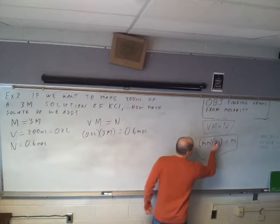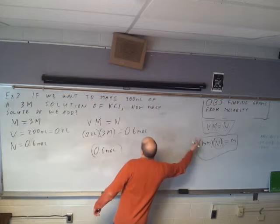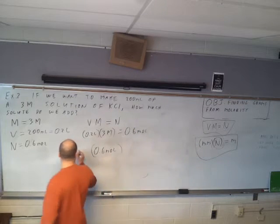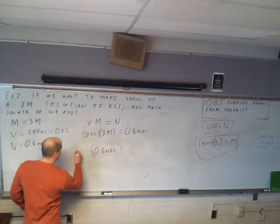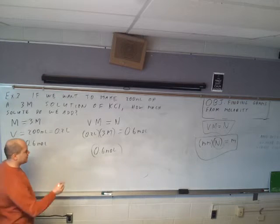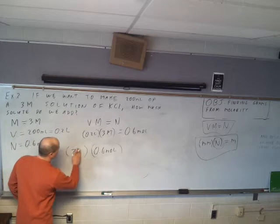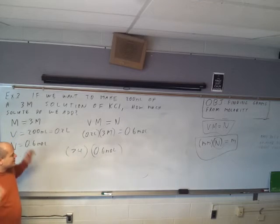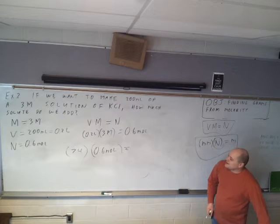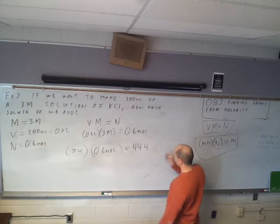Step two: we fill in N. So 0.6 moles times the molar mass of potassium chloride. Potassium is 39, chlorine is 35, so the molar mass is 74 g/mol. So 74 times 0.6 gives us 44.4 grams.